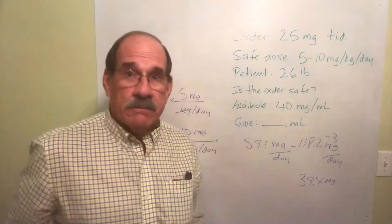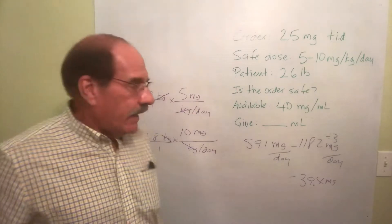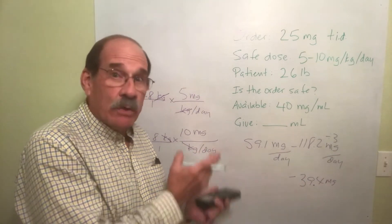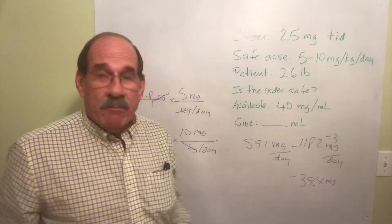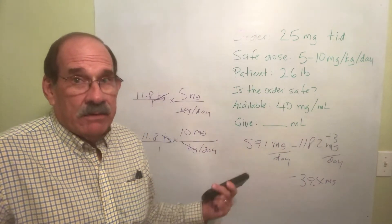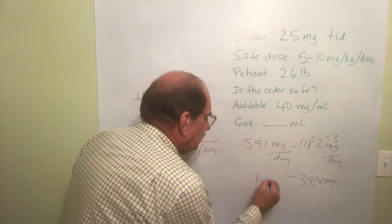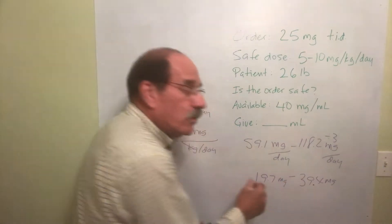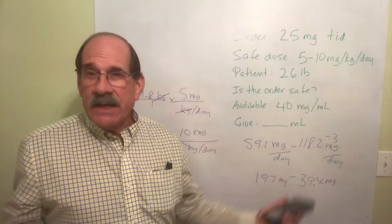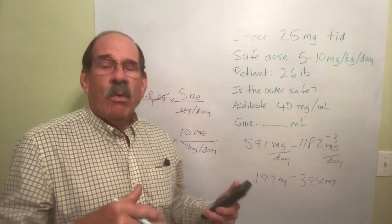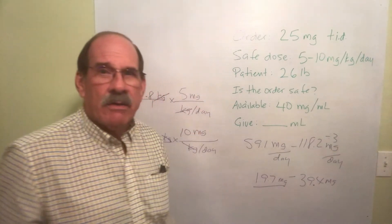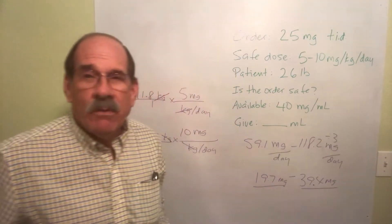That result is per dose. For the least amount, I take 59.1 mg/day and divide by 3, which gives 19.7 milligrams. So for my patient who weighs 26 pounds — not any other patient — a safe per-dose amount is anything between 19.7 milligrams and 39.4 milligrams.